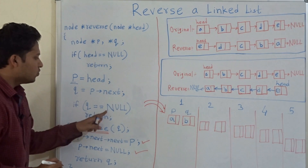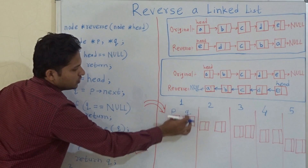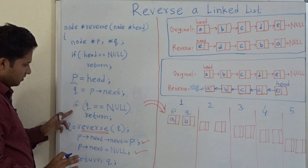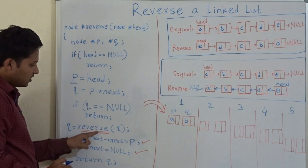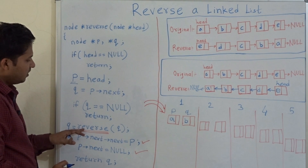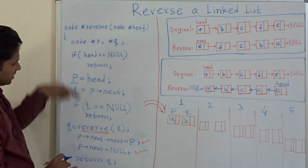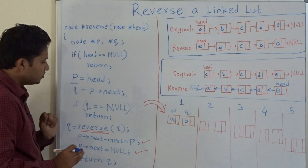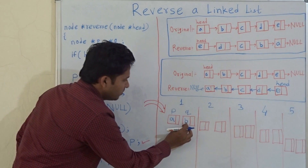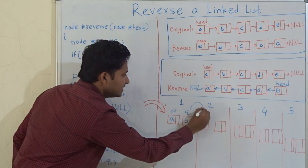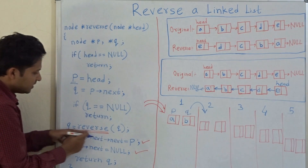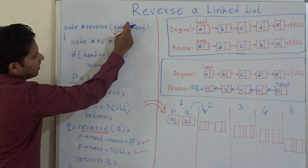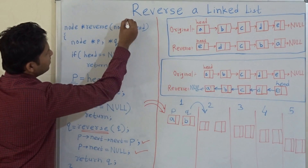Now if Q is equal to null — Q is not null here — so we go to the next step, which is calling the reverse function. This is a recursive function; we are calling the same function inside itself. So we will pass Q, which is B, to the reverse function. We go into the second recursion, and this time the parameter — the head — is B.